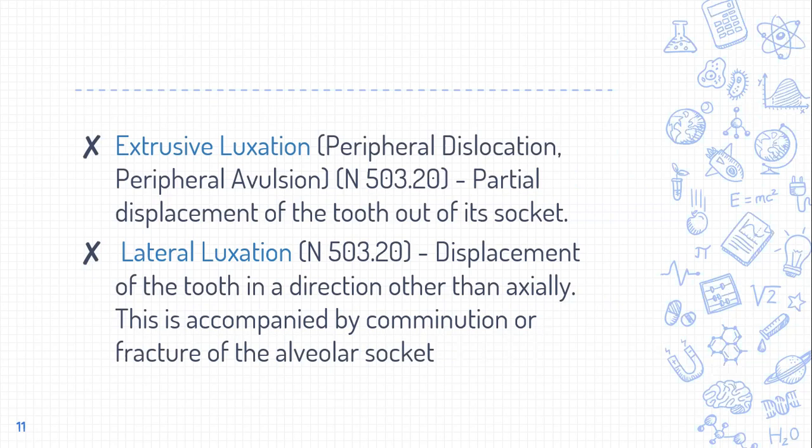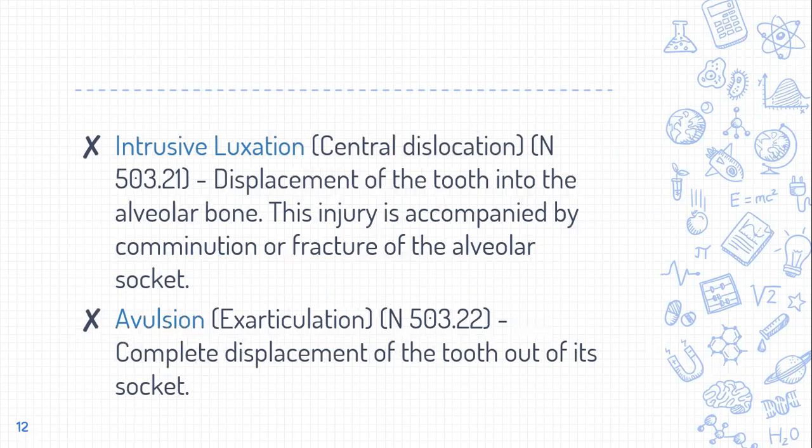Lateral luxation is displacement of the tooth in a direction other than axial — it may be displaced to any side — and is accompanied by fracture of the alveolar socket. During lateral luxation, movement occurs to the right, left, palatal, or labial side, which causes fracture of the alveolar socket. Intrusive luxation, otherwise known as central dislocation, is displacement of the tooth into the alveolar bone, also accompanied by fracture of the alveolar socket.